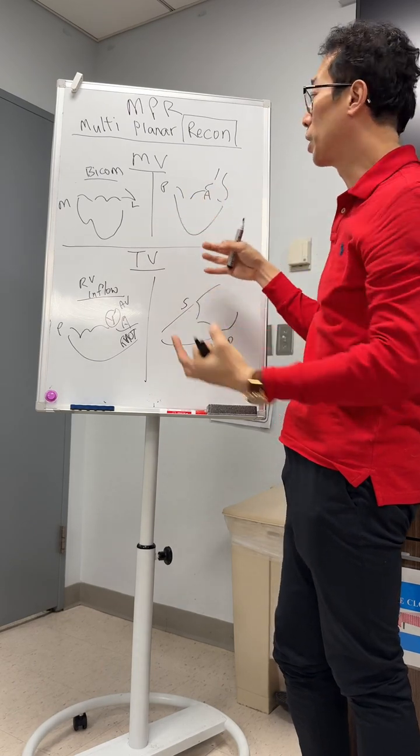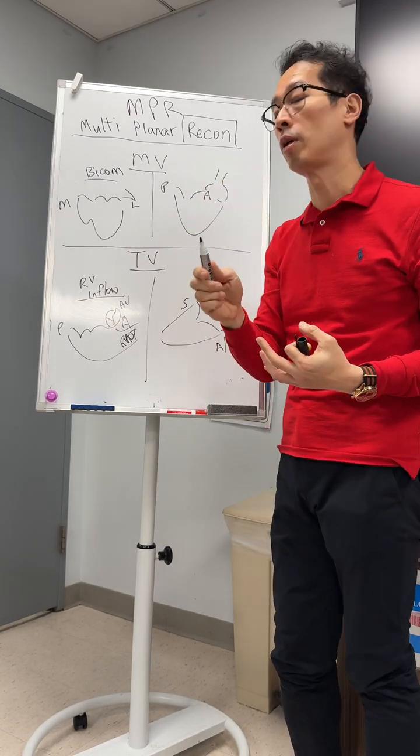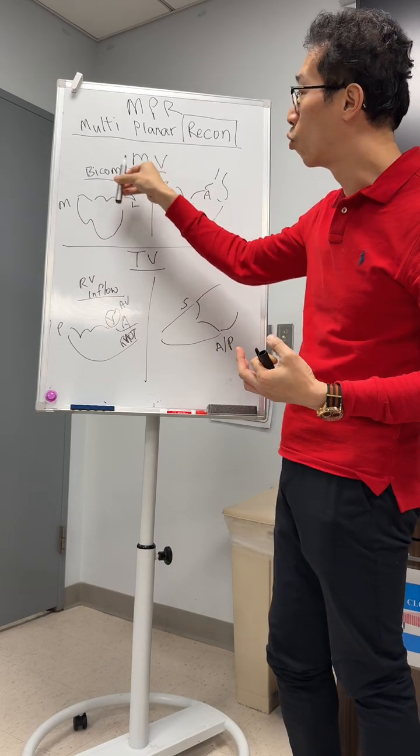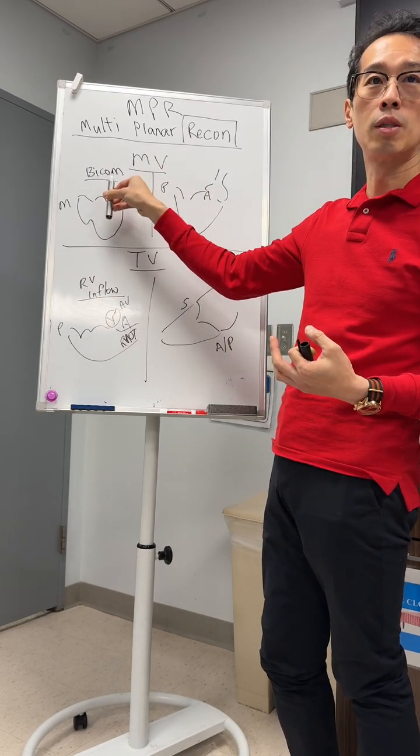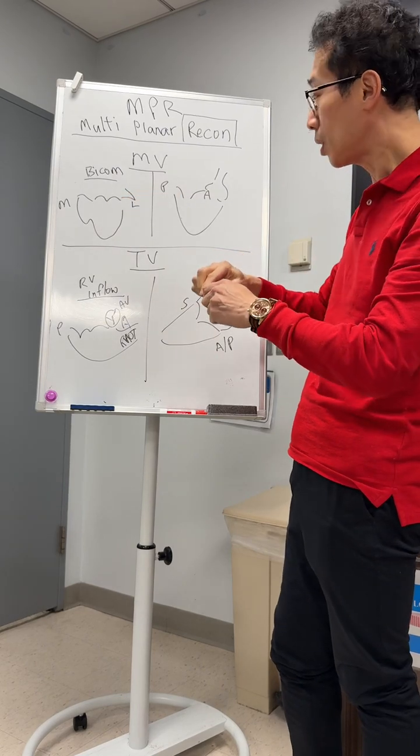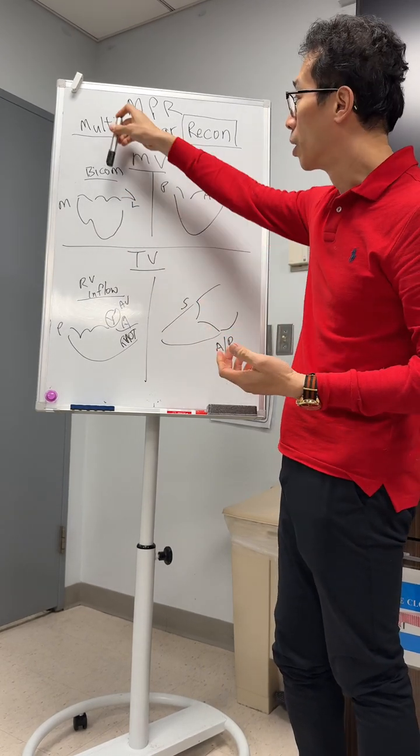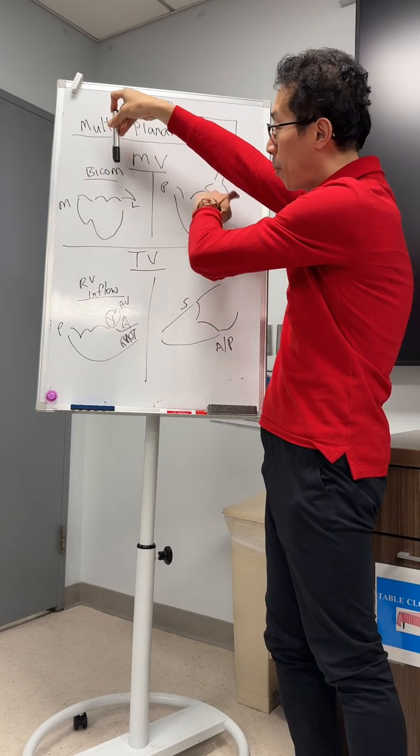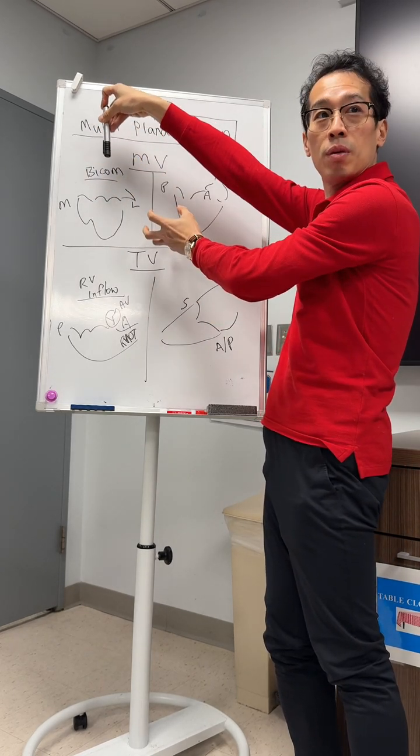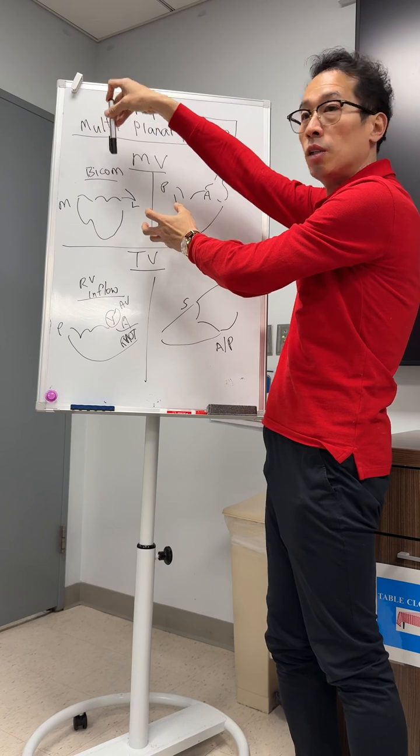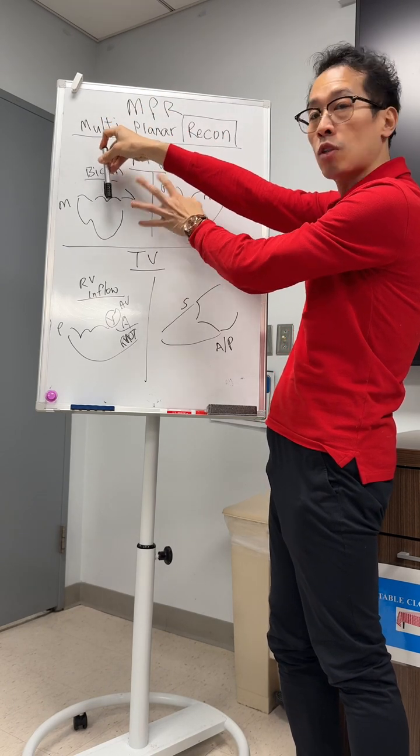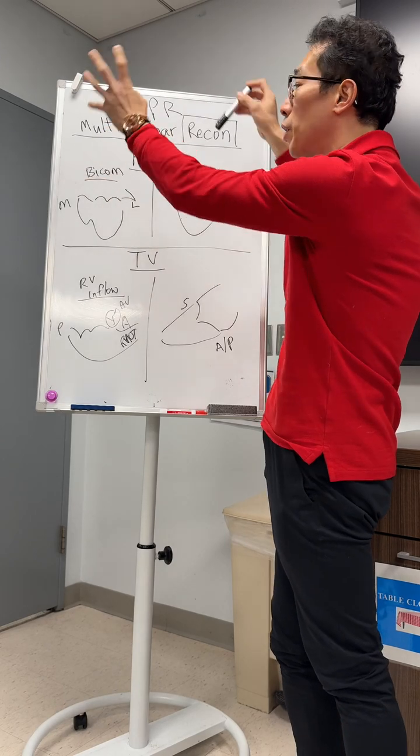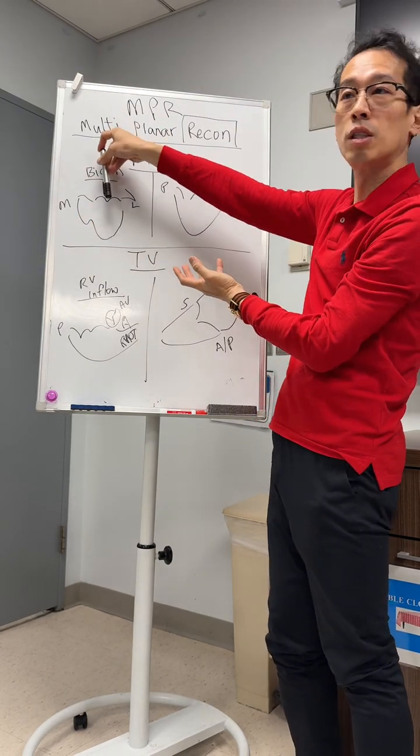The other thing that you want to make sure that it's important to note for MPR is that if you have a device there, the device has to be within your crop box. What do I mean by that? So for example, let's say you're doing it here. If your device is up there, you crop your MPR, you're not going to see this device because it's out of view.